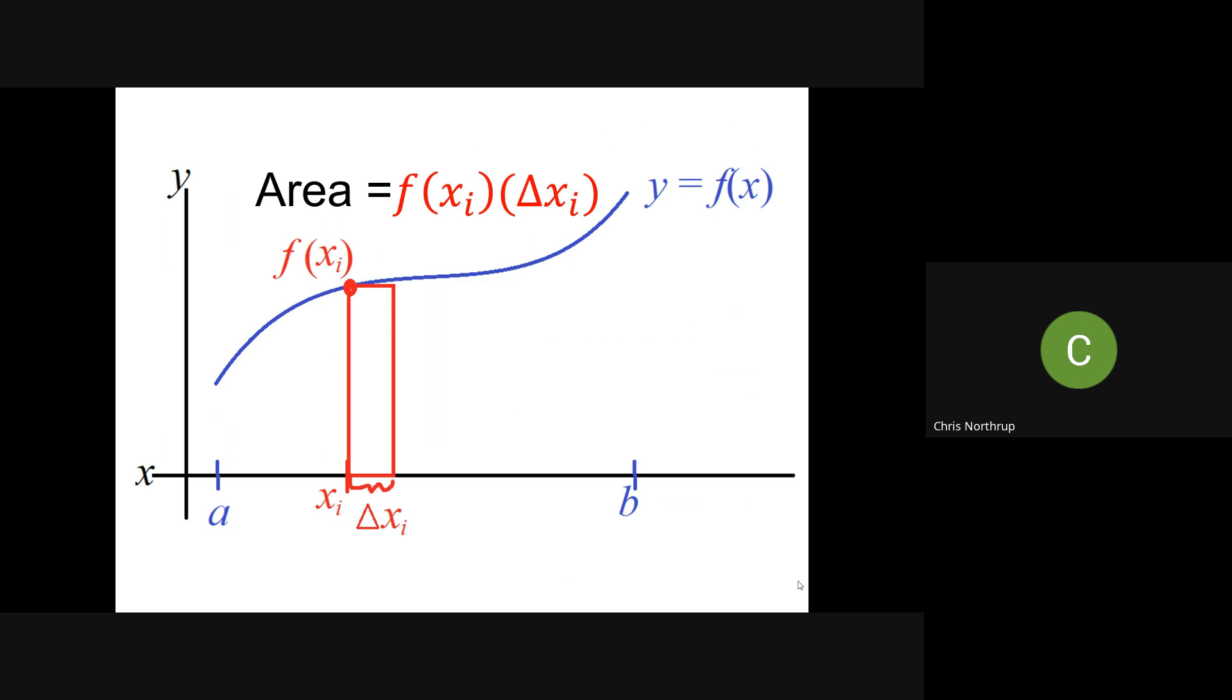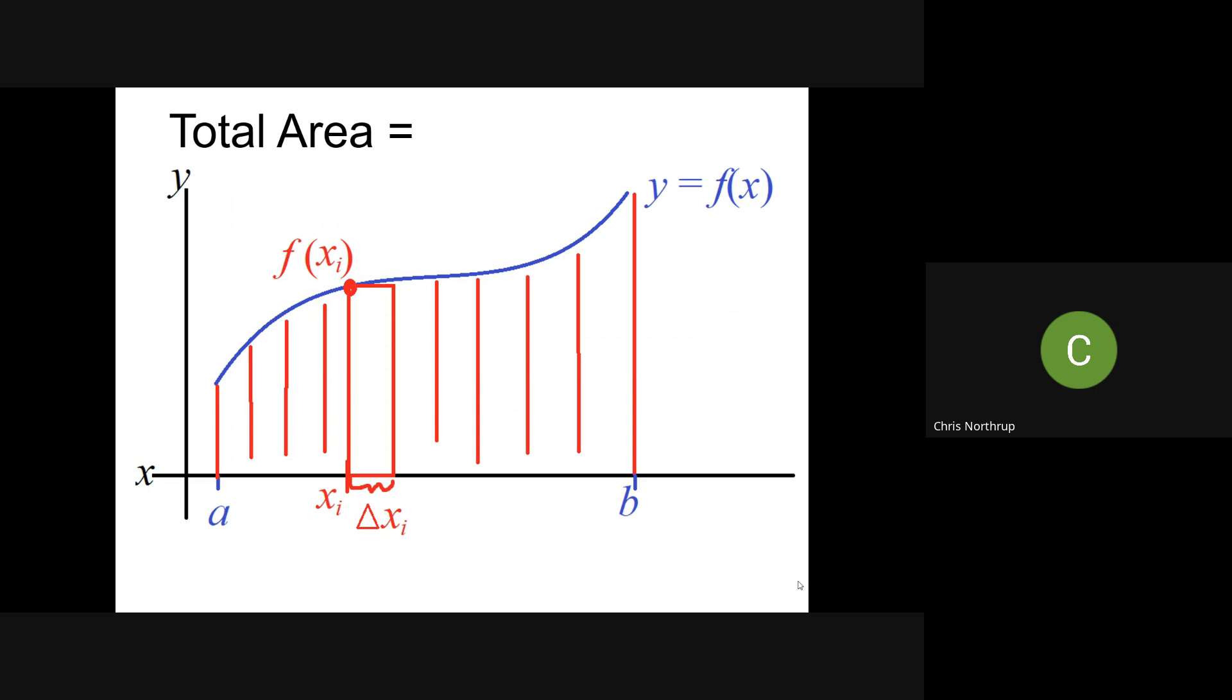that total area would be, say like adding f of x sub zero times the width of that rectangle at the first x value, plus f of x one times the width of that rectangle at that x value, plus all the way to f of x sub n. So x sub n in this case would be b, and x sub zero would be a. That's the starting x value, ending x value. And so I could add all of that together.